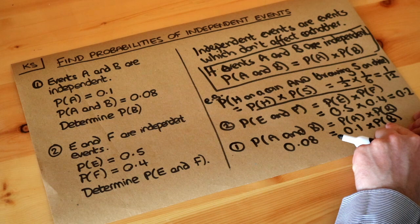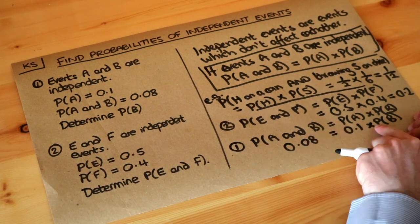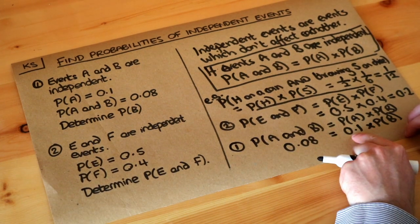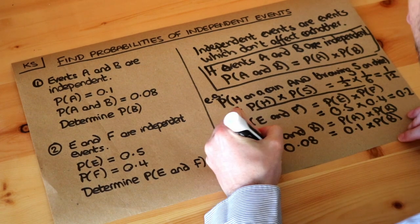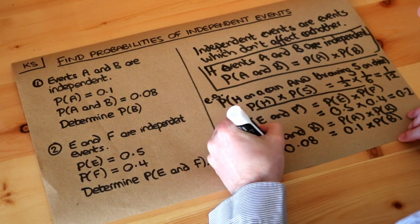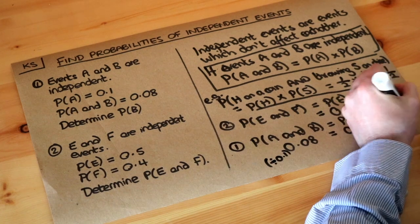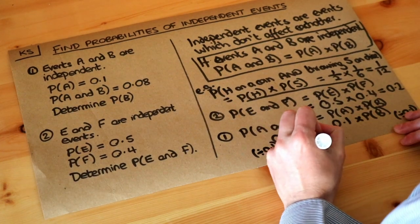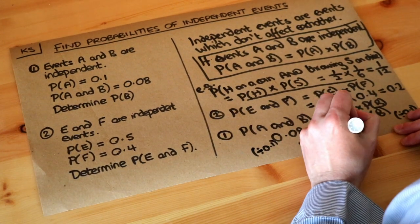Now if probability of B times by 0.1 is 0.08, we want to get rid of that times by 0.1, so we just divide both sides of the equation by 0.1. And that will give us 0.8 as the solution.